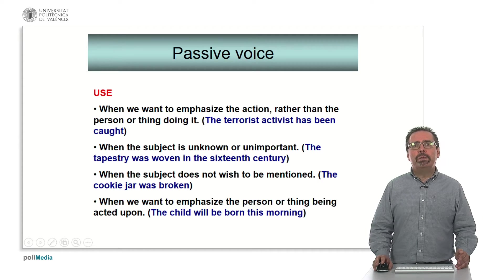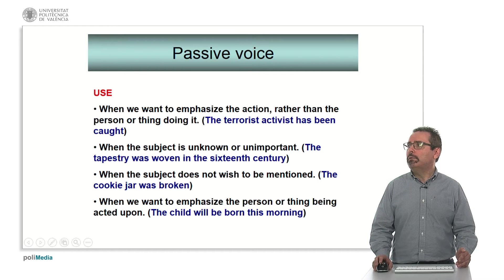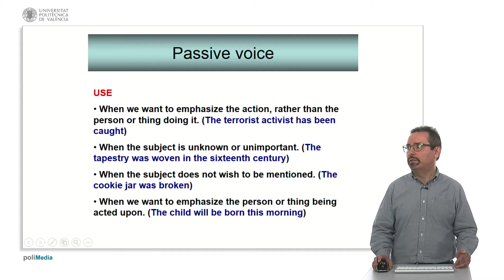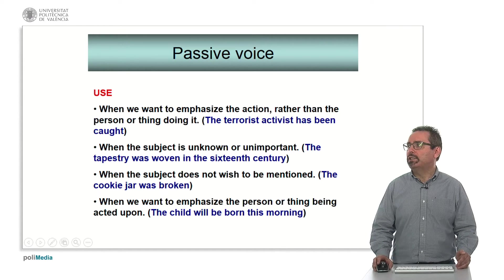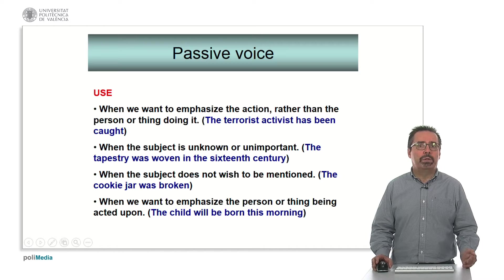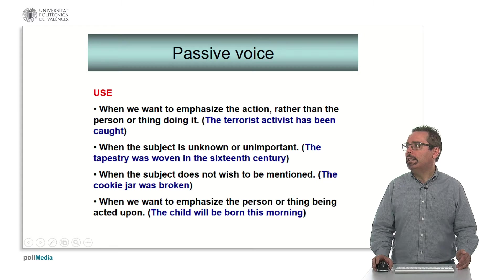Now we will move on to the use of the passive voice. Normally we use it when we want to emphasize the action rather than the person or thing carrying out this action. For example: 'The terrorist activist has been caught' — we concentrate on the action as the most important thing. The second use is when we don't know who carried out the action. 'The tapestry was woven in the sixteenth century' — we don't know who did it.